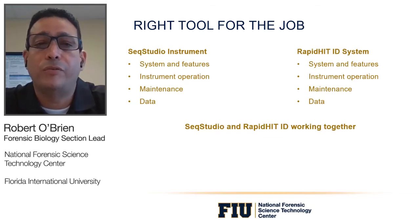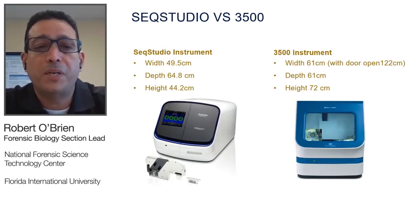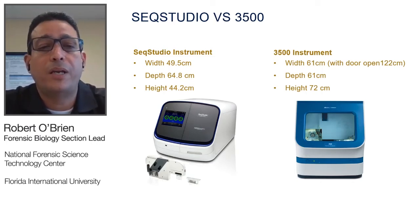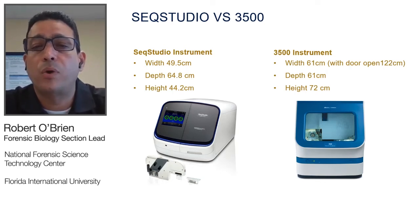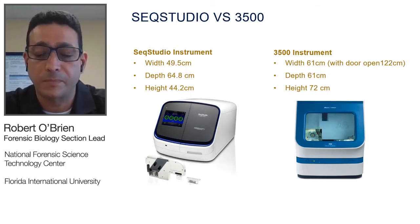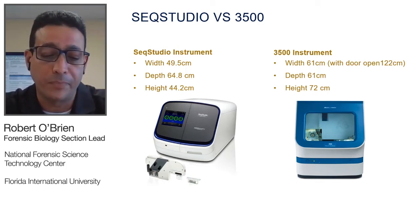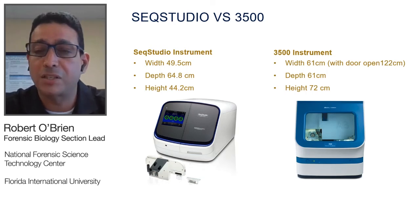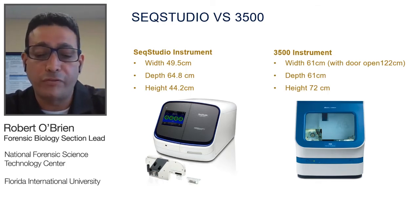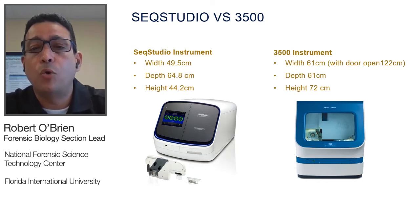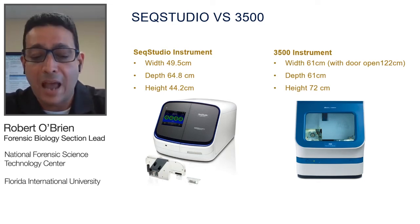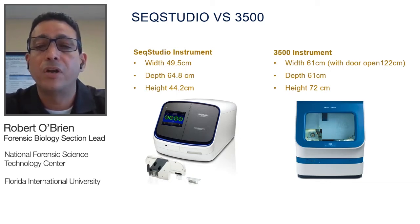The SEEK Studio has a width of about 49.5 cm, a depth of 64.8 cm, and a height of 44.2 cm. The 3500 has a width of 61 cm, a depth of 61 cm, and a height of 72 cm — and requires 122 cm of clearance to open the door. You can in fact fit two SEEK Studios in the space needed to open the 3500's door. The SEEK Studio door opens upward rather than to the right, so it takes no additional lateral space.